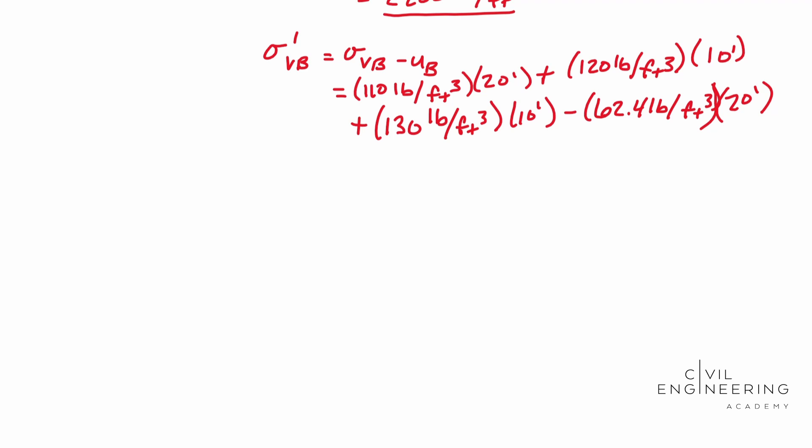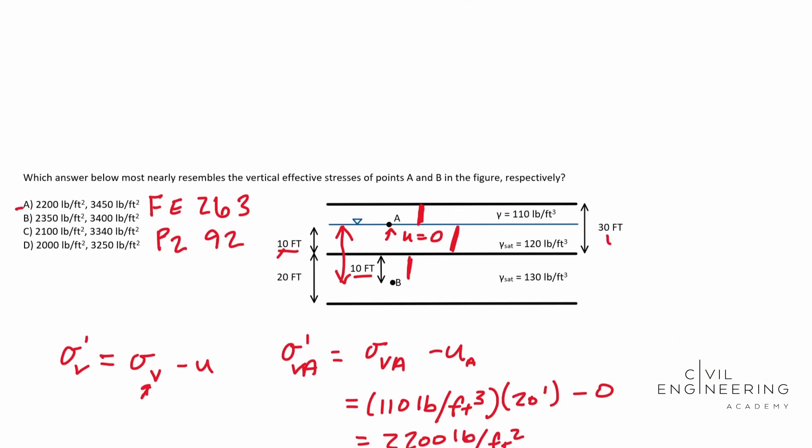So let's solve for that guy. I ended up with sigma prime VB, I ended up with that guy being 3452 pounds per square foot. And so sure enough, it is, guess what? It is A. So hey, I hope this video helps and we'll catch you next time. We'll see you next time.